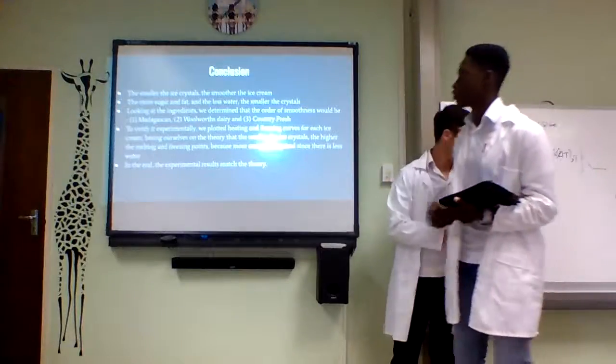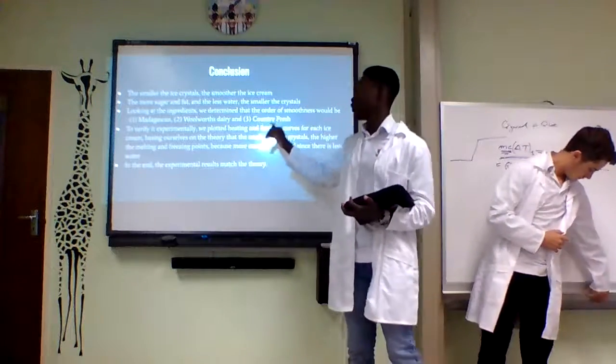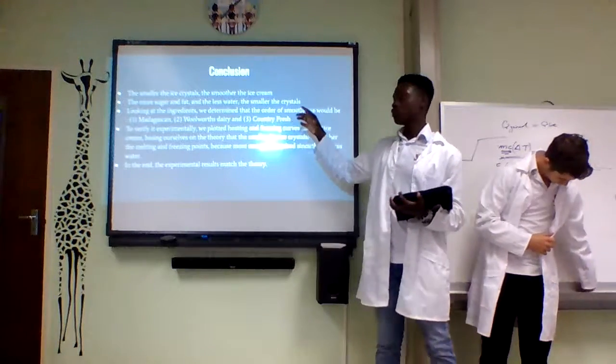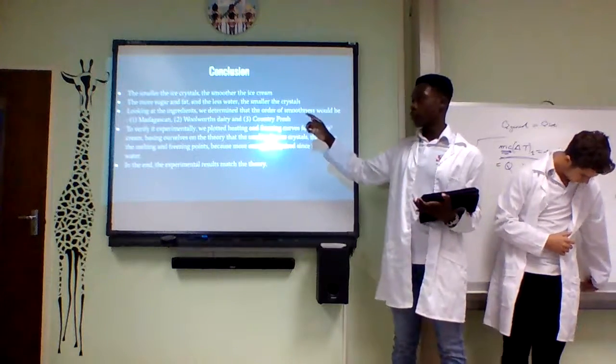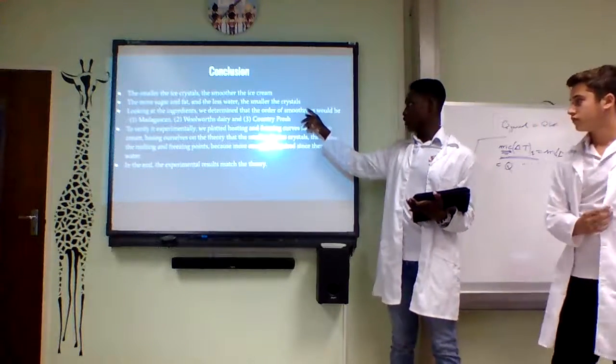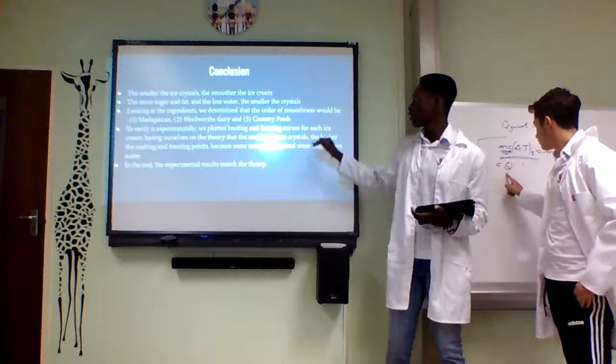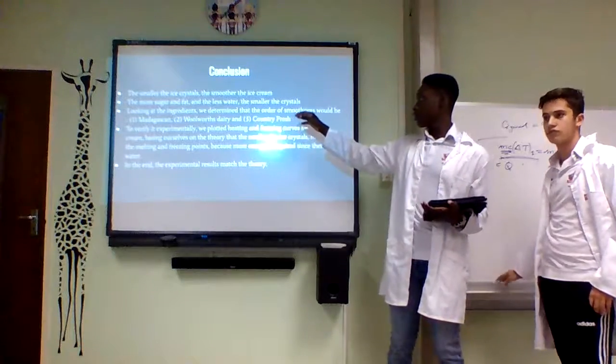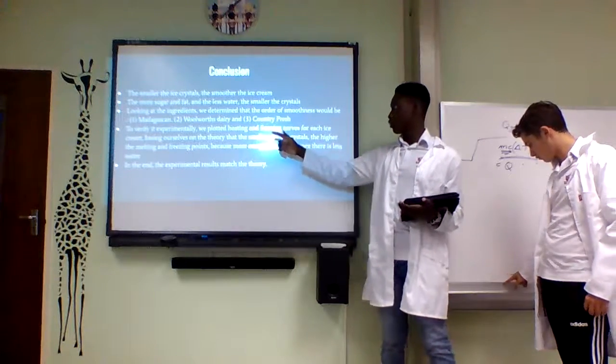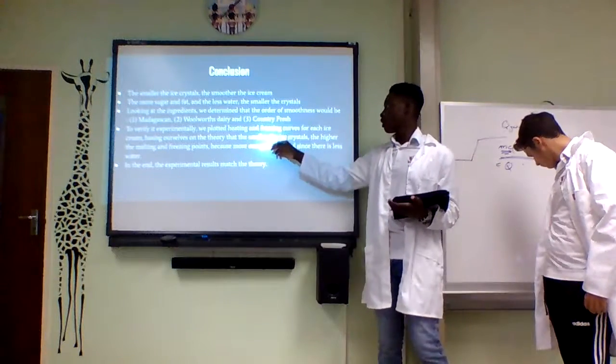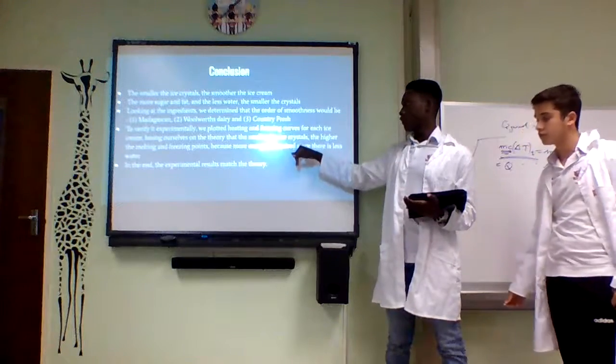So in conclusion, this is just a recap. The smaller the ice crystals, the smoother the ice cream will be. The more sugar and fat there is, the smaller the crystals will be. But the less water there is, the smaller the crystals will be. Looking at the ingredients, we determined that the water content would be Madagascan, Woolworths, and Country Fresh. And experimentally, we verified the theory.